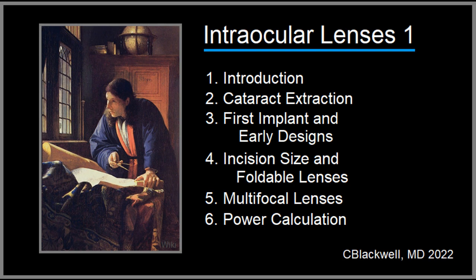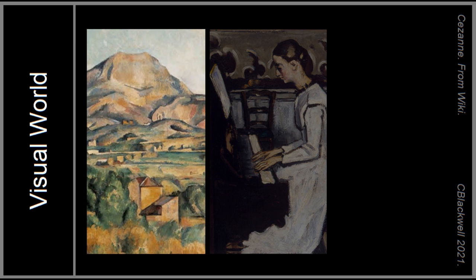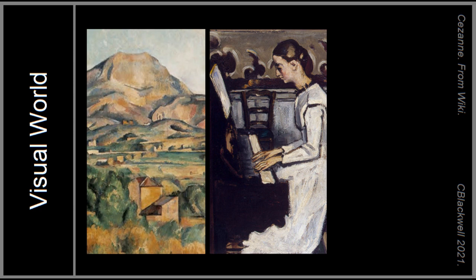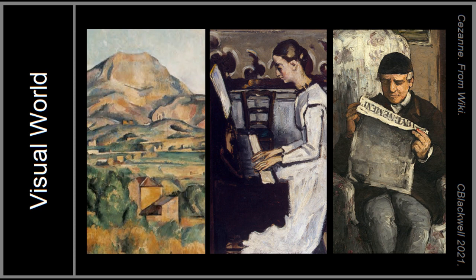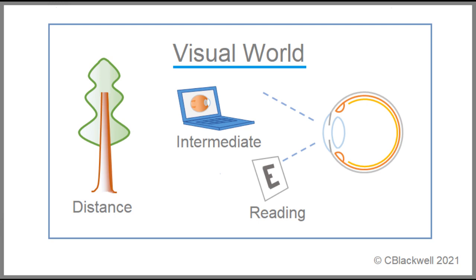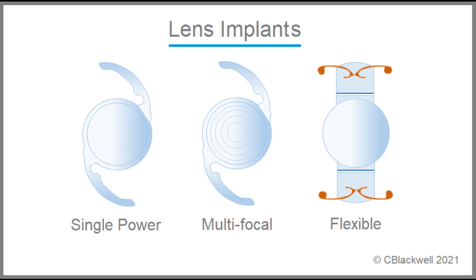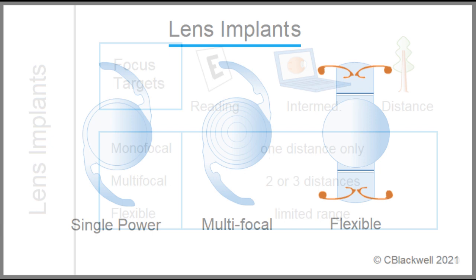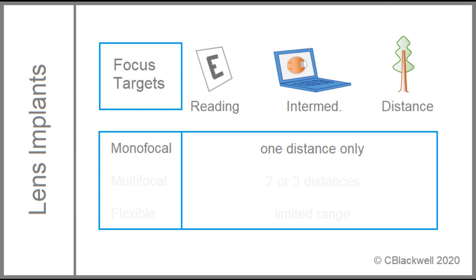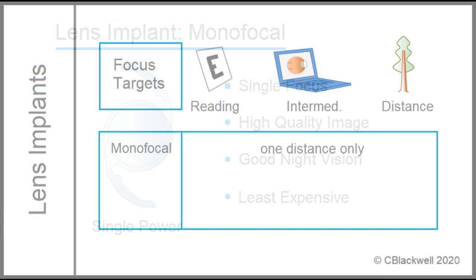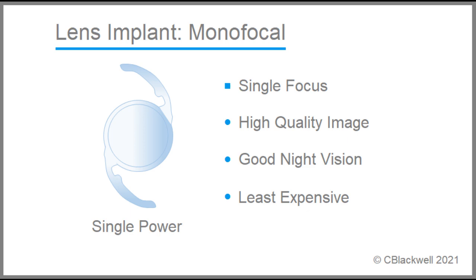A monofocal lens is a big improvement compared to no lens, but things could be better. Our activities of daily living don't all occur at a single distance. We need clear vision for distance and driving, but a lot of activities occur at arm's length — like a computer screen, sheet music, and the instrument panel of your car — and there is reading and close-up work. Since the 1990s, a lot of effort has gone into developing implants to better address the visual needs of daily life at all three distances. There are three categories of lens implants: we started with single power, and to address multiple distances we now have multifocal and flexible lenses.